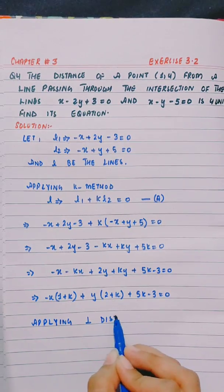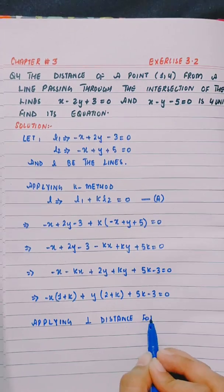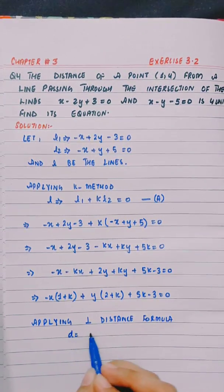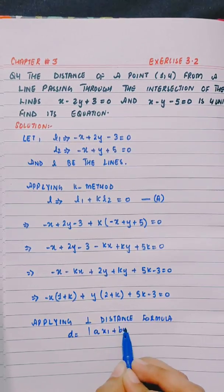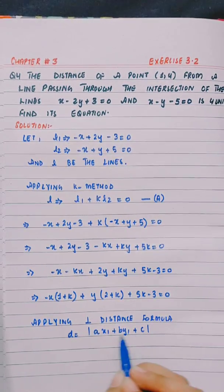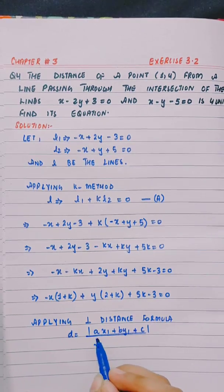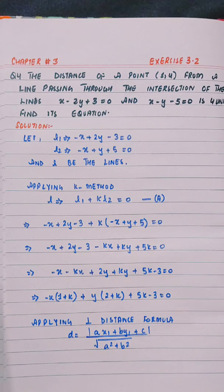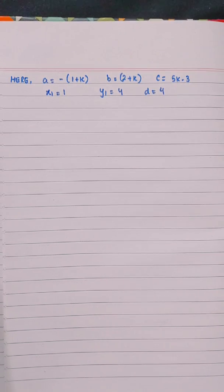Applying the perpendicular distance formula, where a equals minus 1 plus k, b equals 2 plus k, c equals 5k minus 3, and the point is x1 equals 1, y1 equals 4, and d equals 4.